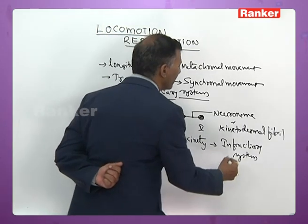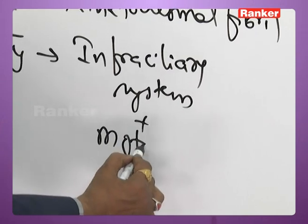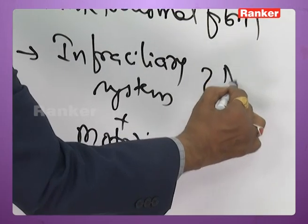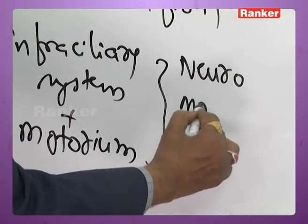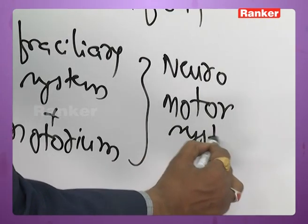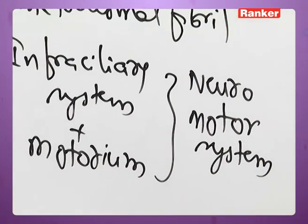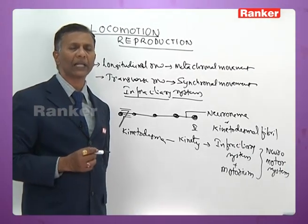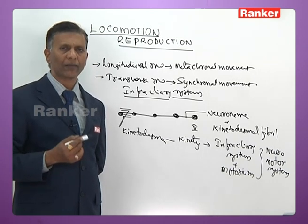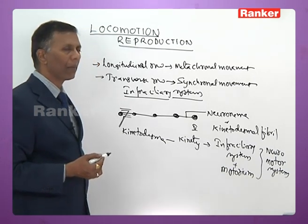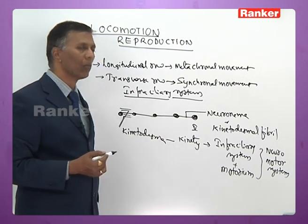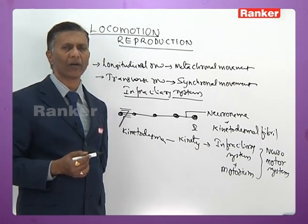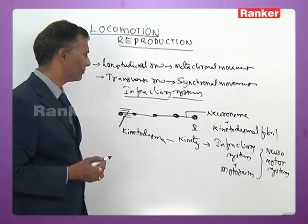The infraciliary system combines with the motorium to form the neuromotor system. The motorium is the network of cilia that lies over the cytopharynx of the ciliates. The neuromotor system controls and coordinates the functioning of cilia in all ciliates.